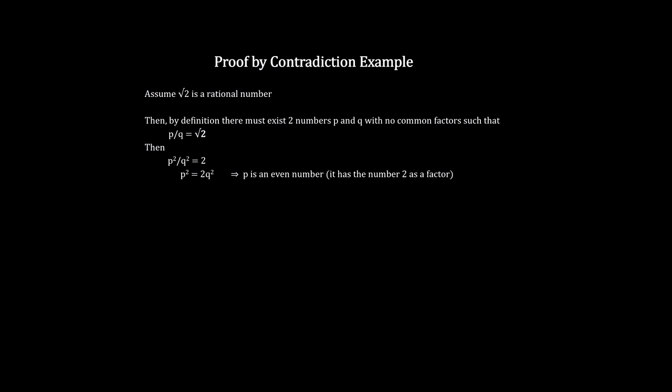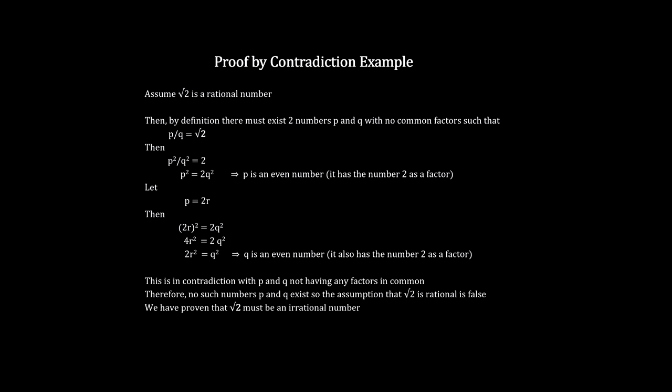Bell's idea was to assume Einstein's hidden variables hypothesis is true, and then show how it leads to a contradiction. This would prove that the hidden variables hypothesis is false.